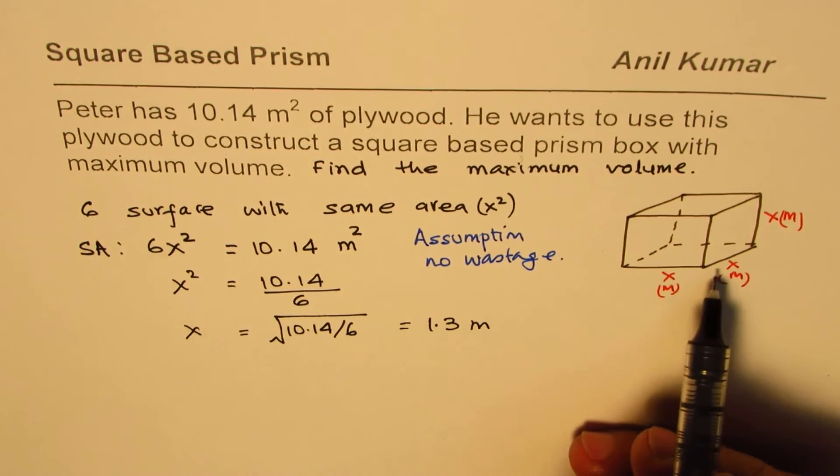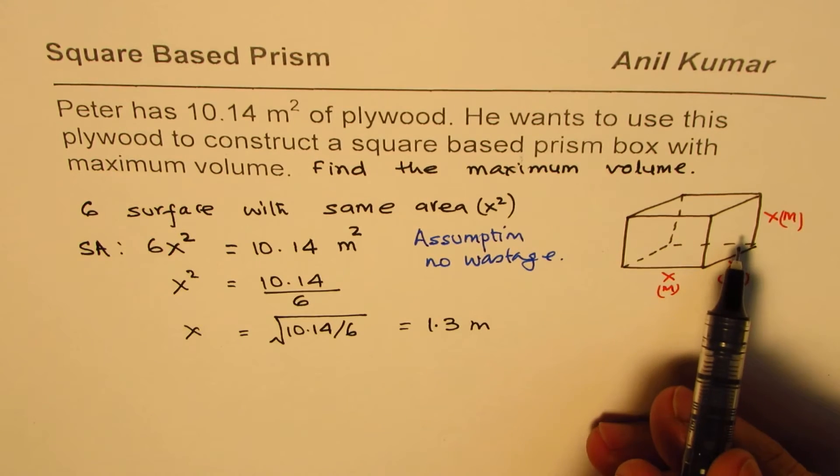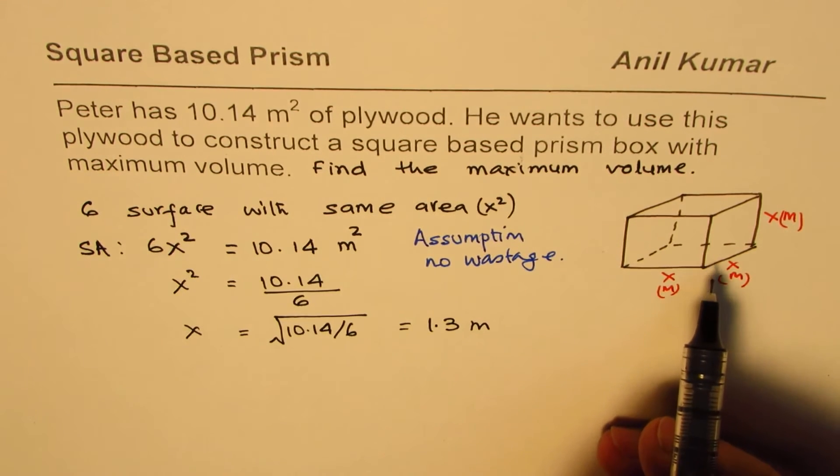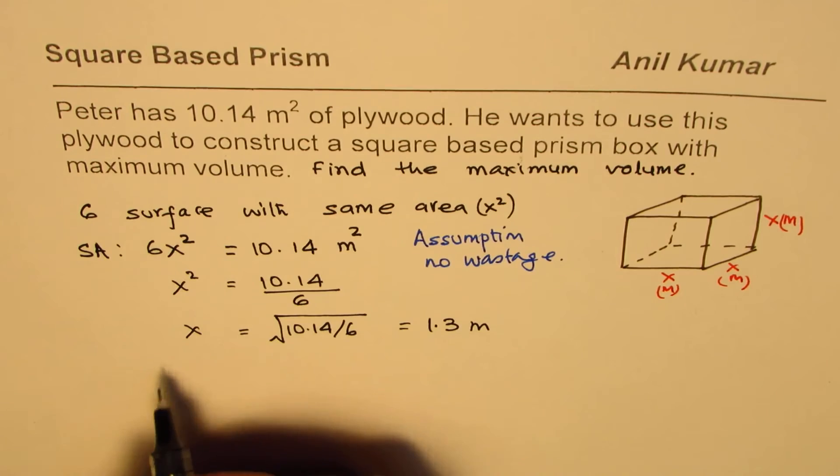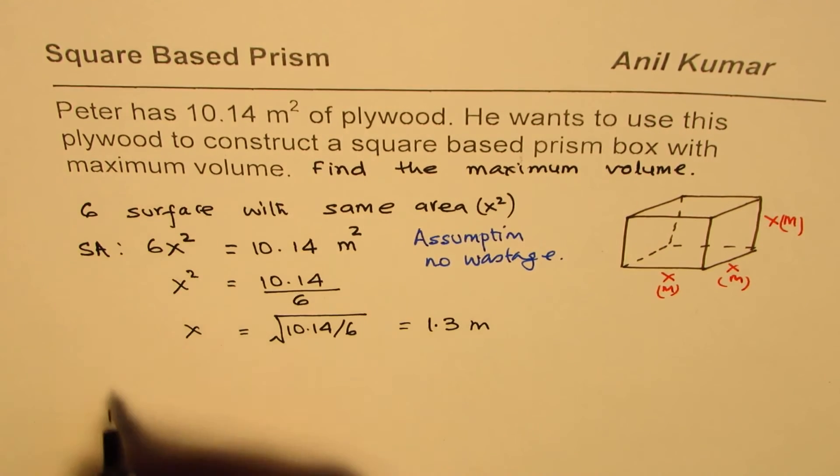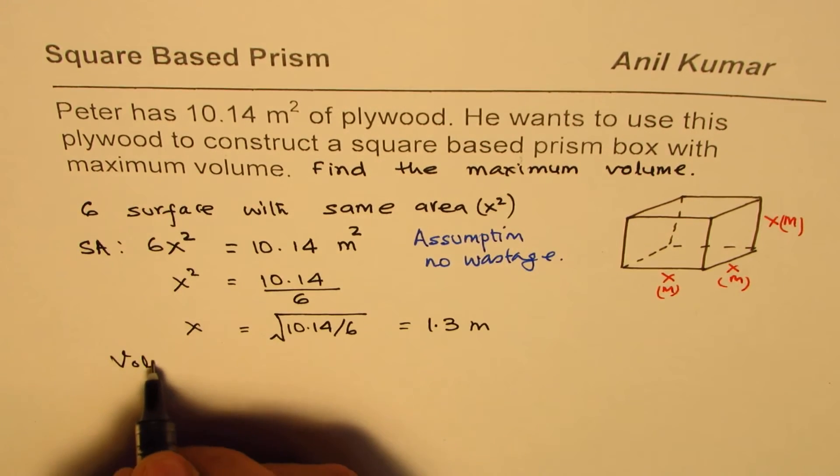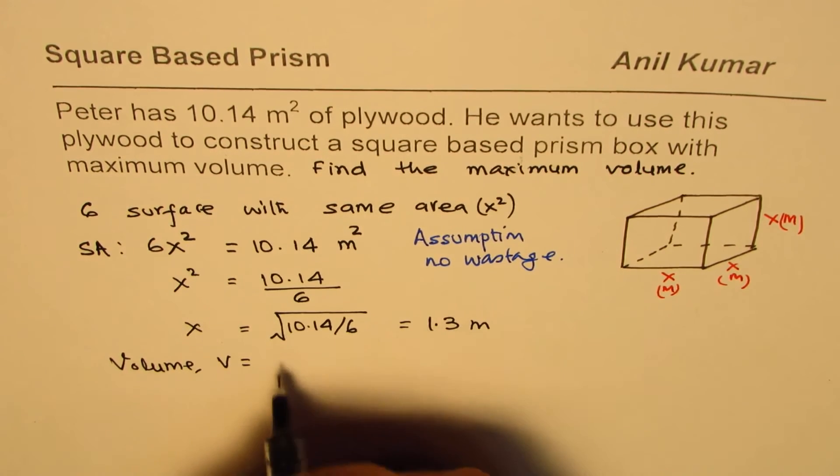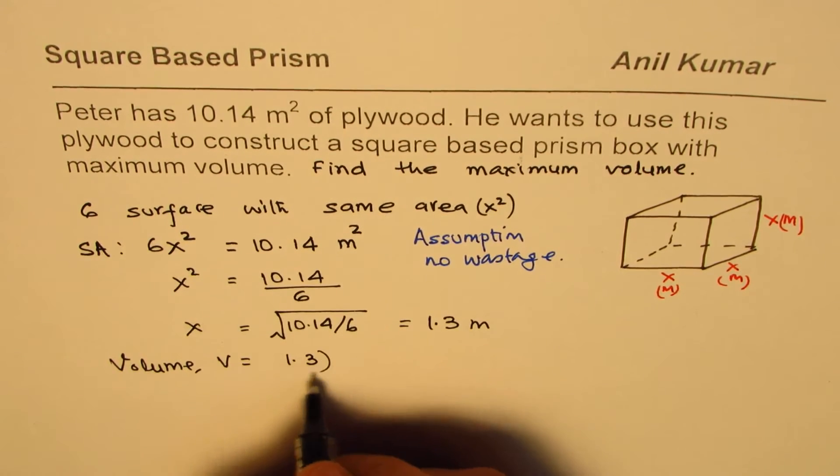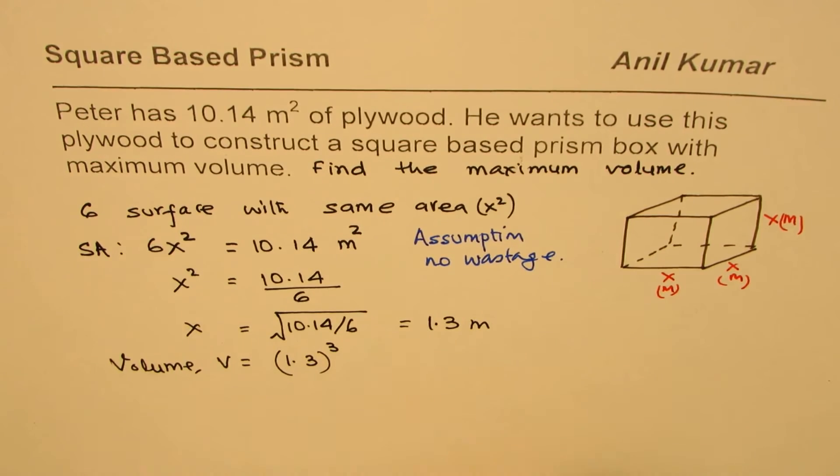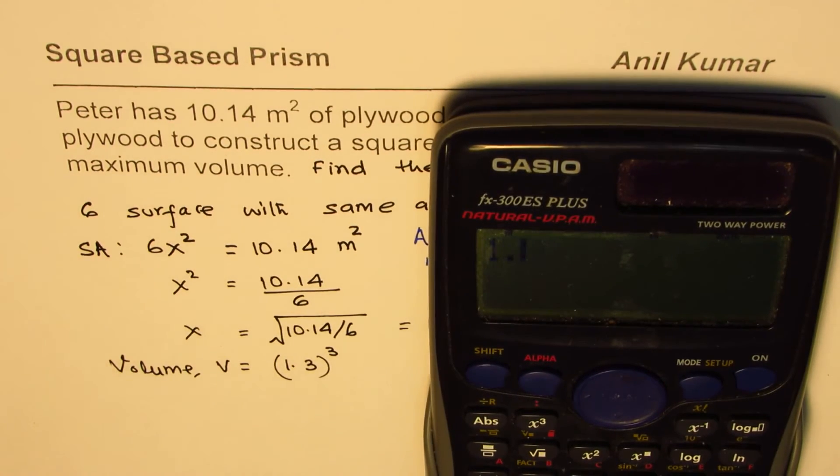If X is the length, width, and height of this particular square-based prism, then what is the volume? We need to find maximum volume, so volume V will be equal to 1.3 cubed.